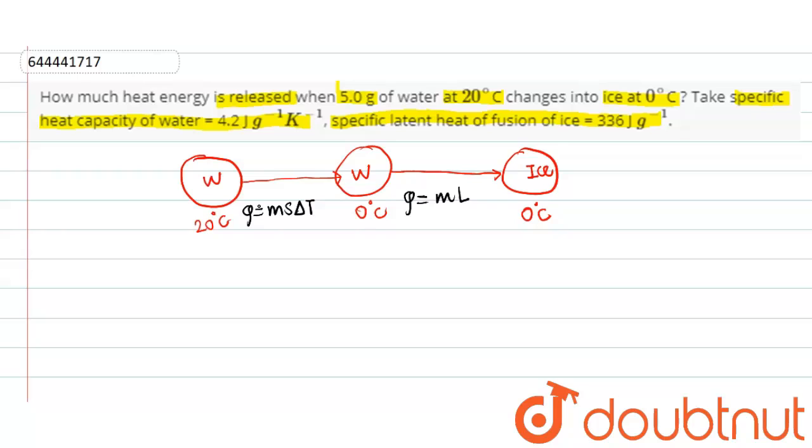Friends, we are given that mass of water equals 5 gram. And the specific heat of water S equals 4.2 joule per gram per kelvin. And latent heat L is given as 336 joule per gram.